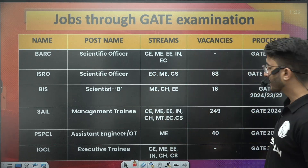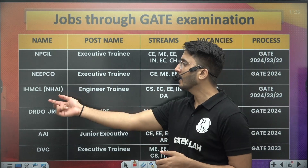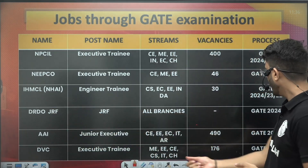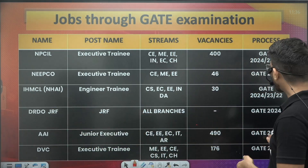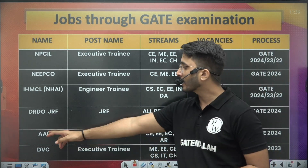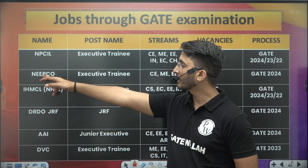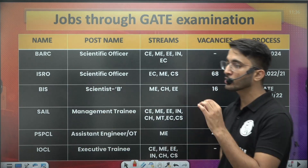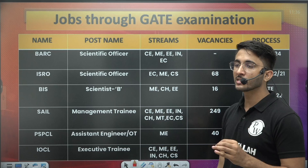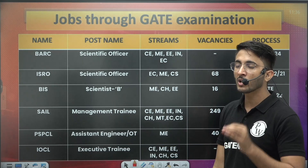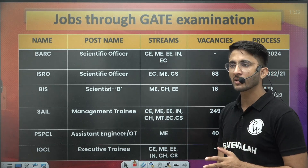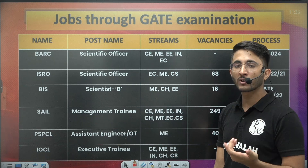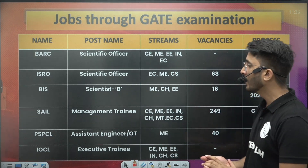All branch data is available here. Similarly, if you talk about NPCL, NIPCO, IHMCL, DRDO JRF, and Airport Authority, you can observe the GATE 2023 PSU list. Almost 10 PSUs have already released official notifications through GATE 2024, and there are some other PSUs going to recruit in the upcoming time — through GATE 2024, GATE 2025, or even after GATE 2025.